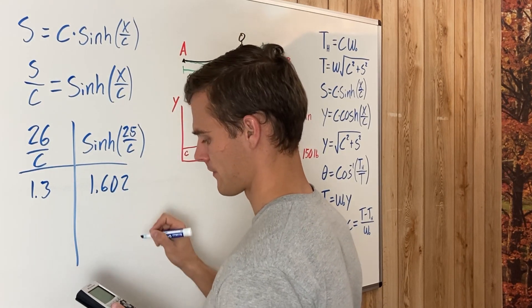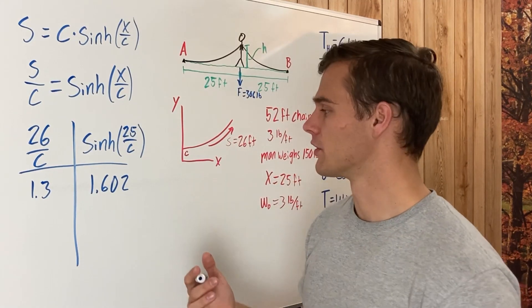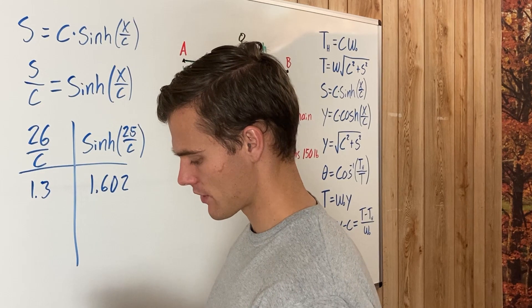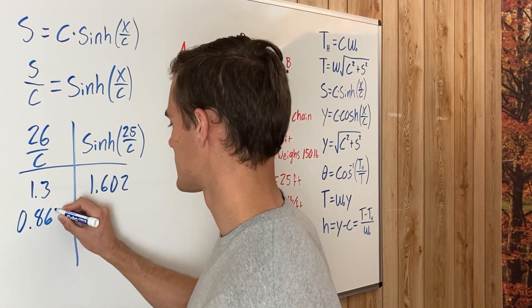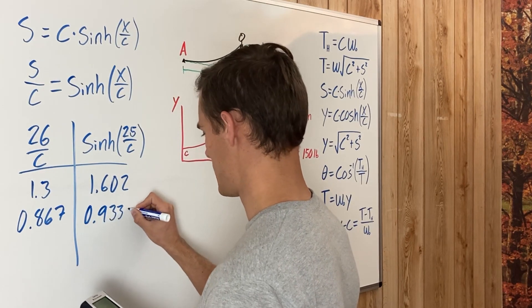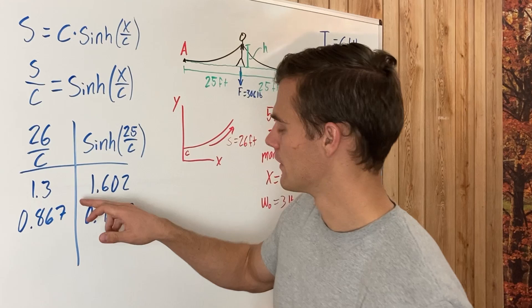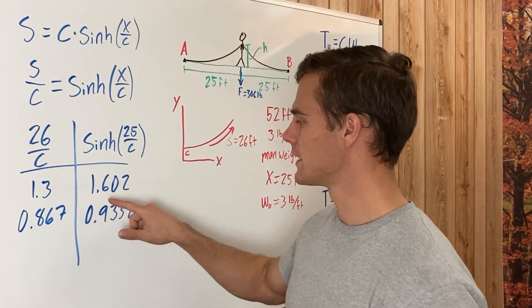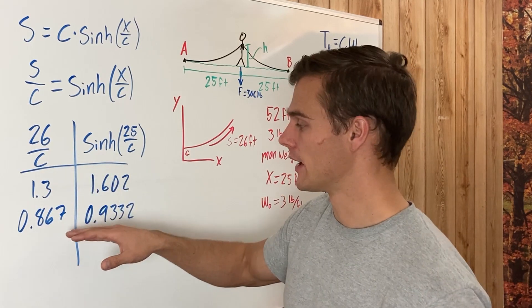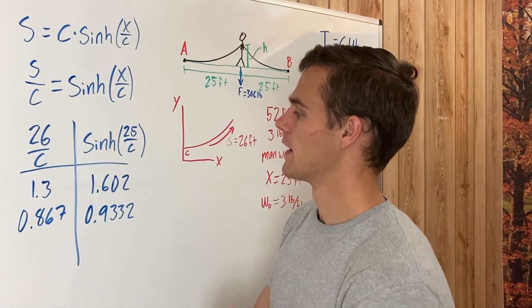Approximately, so that's pretty close. We don't really know whether C is too high or too low, so we just have to keep going another direction. We'll say that C is 30. When we plug that in we get that 26 divided by 30 is approximately 0.867, and then the hyperbolic sine of 25 divided by 30 is 0.9332. So that did get us closer. You'll notice that 1.3 is smaller than 1.6, and 0.8 is less than 0.9, so this side is smaller.